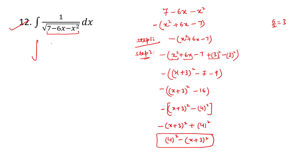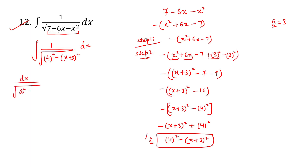So the integral becomes ∫ 1/√[4² - (x + 3)²] dx. Applying the formula ∫dx/√(a² - x²) = sin⁻¹(x/a) + C, we get sin⁻¹((x + 3)/4) + C as the answer.